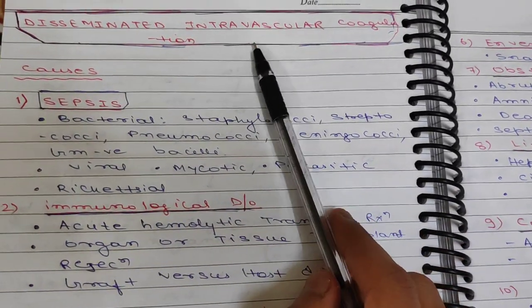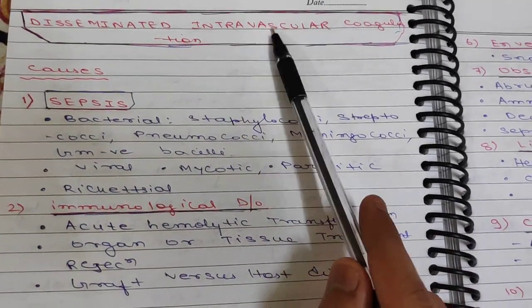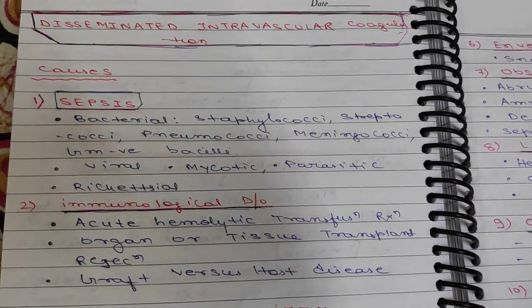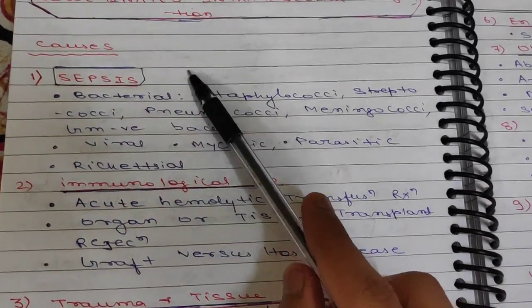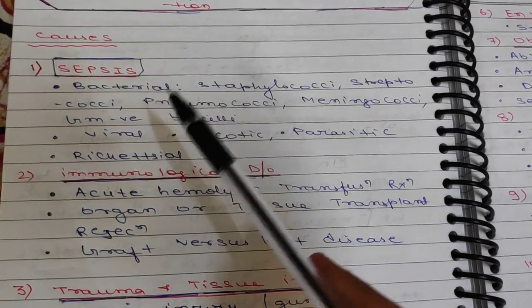Hello friends, in medicine we are starting with the next topic: disseminated intravascular coagulation from the internal medicine book. First, we will discuss the causes. The first cause is sepsis, which includes bacterial, viral, mycotic, parasitic, or rickettsial infections.